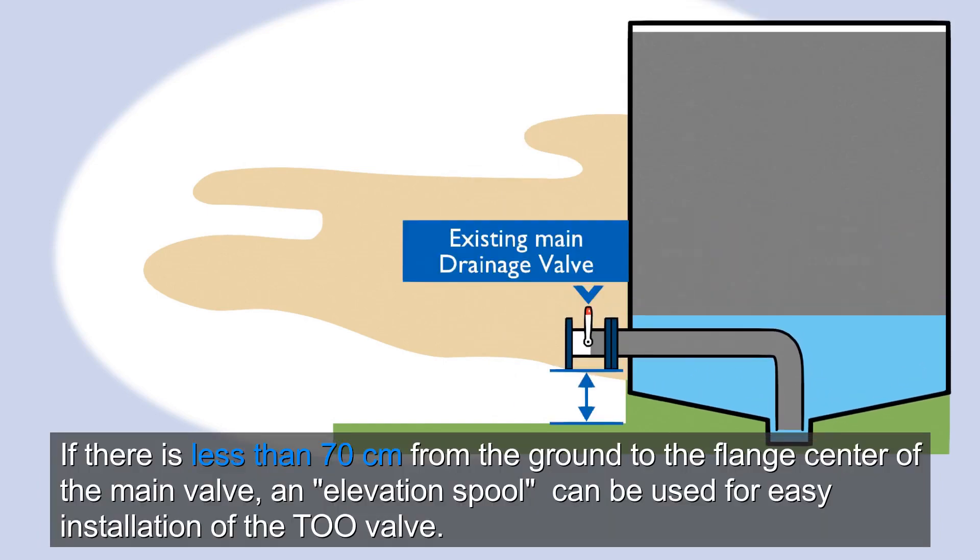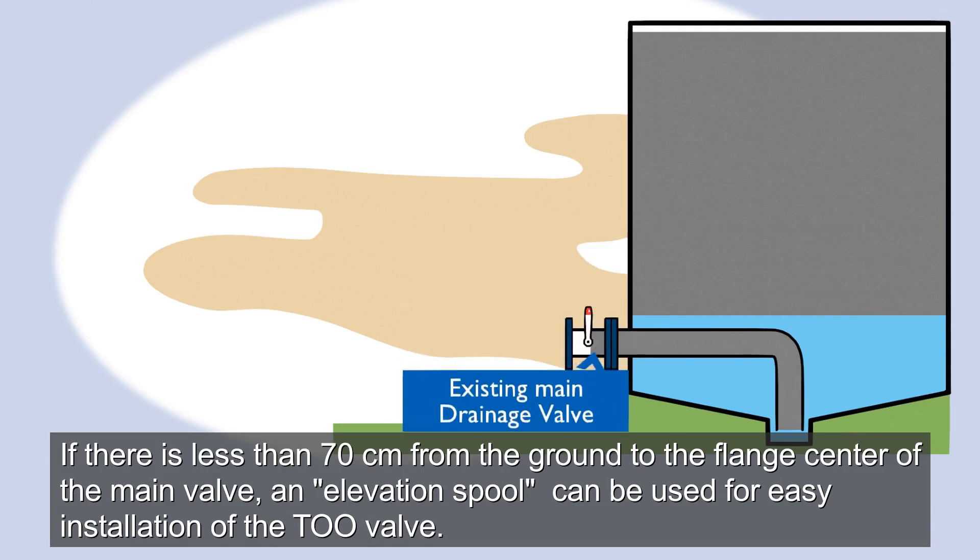If there is less than 70 cm from the ground to the flange center of the main valve, an elevation spool can be used for easy installation of the TOO valve.